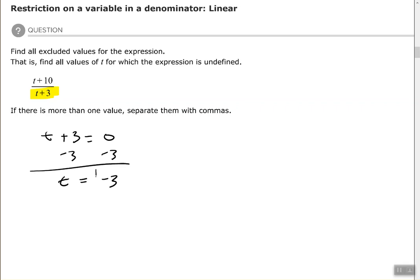The excluded value is negative 3. So again, to find your excluded value, look at your denominator, take the expression from your denominator, set it equal to zero and solve. And this will be used more later on in this chapter.